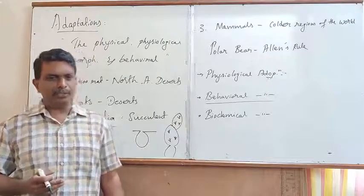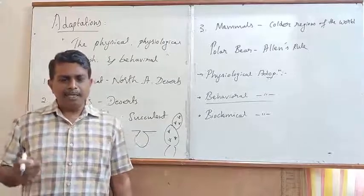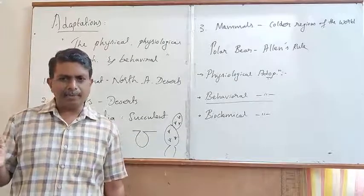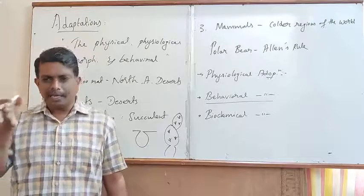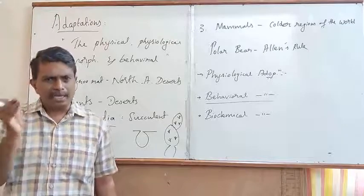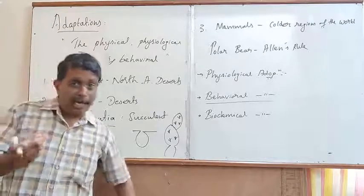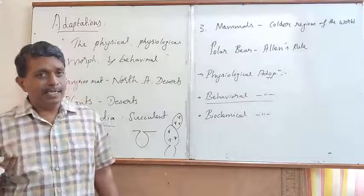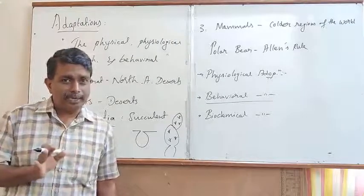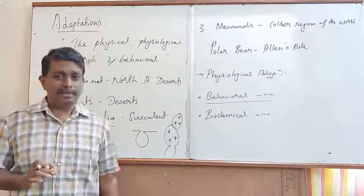The next important aspect is with reference to biochemical adaptation. In most animals, metabolic reactions proceed optimally in a narrow range of temperature. They are sensitive to narrow ranges of temperature. If there is a slight alteration in metabolic activities, it leads to the death of the organism. In this aspect, the majority of organisms exhibit biochemical adaptation.